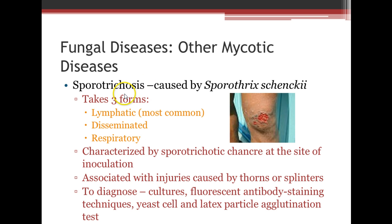Sporotrichosis is another 'osis,' caused by Sporothrix schenckii, sometimes called rose thorn disease because it inhabits the thorns of roses. A scratch can harbor the organism in the skin. It can be a lymphatic issue with swollen lymph nodes, can become disseminated, or can be a respiratory issue. A sporotrichotic chancre typically appears at the site of inoculation. Diagnosis includes culture, fluorescent antibody staining techniques, and latex particle agglutination.